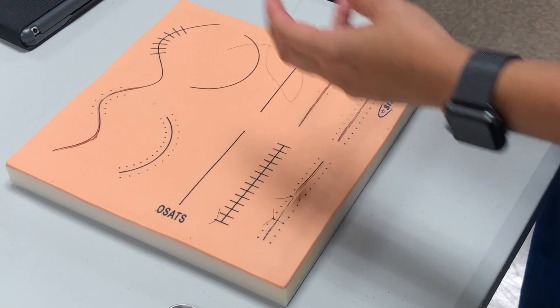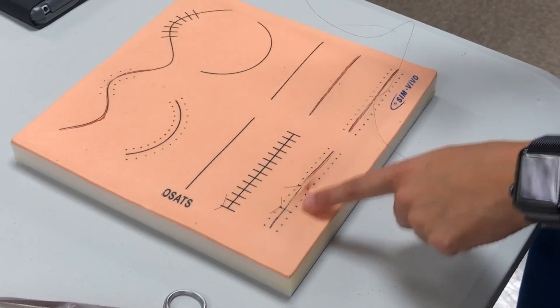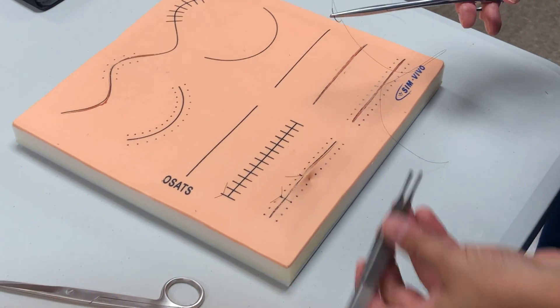Alright, so now we're going to do a continuous or running stitch. We have our simple interrupted, our vertical mattress, and now we're going to do a continuous stitch.